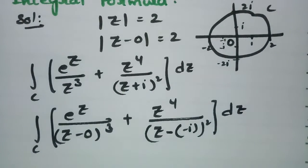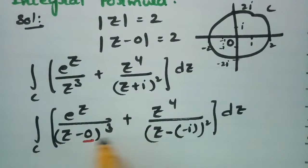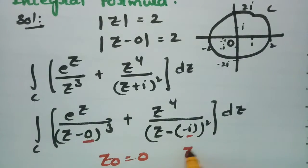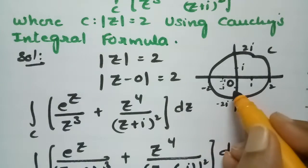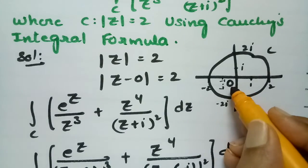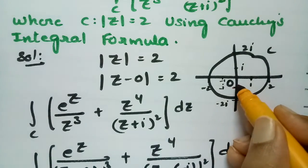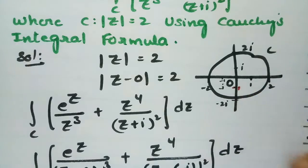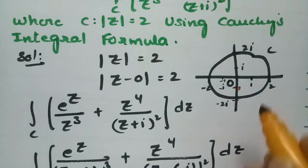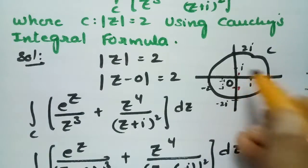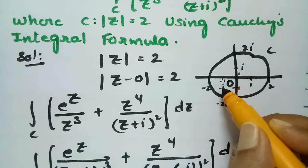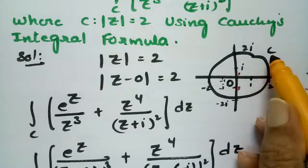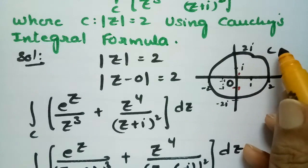The singular points here are z₀ = 0 and z₀ = −i. Observing the diagram, −i is inside the circle c, and z = 0 is also inside c. So both singular points are inside the contour.